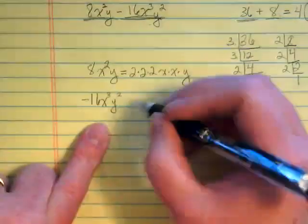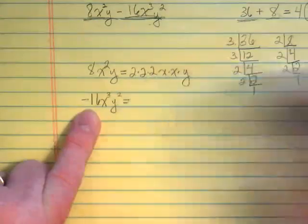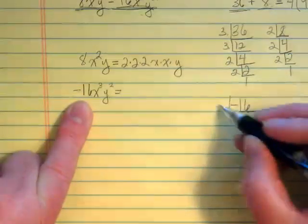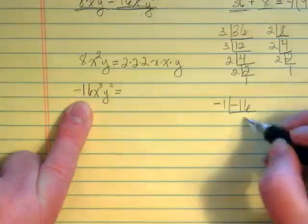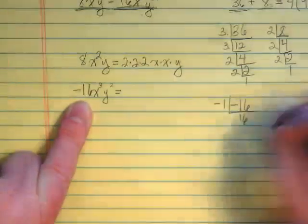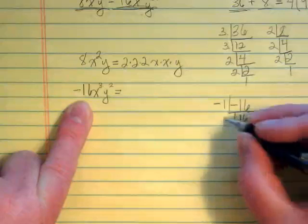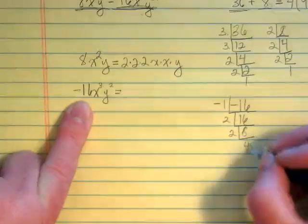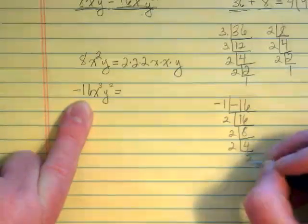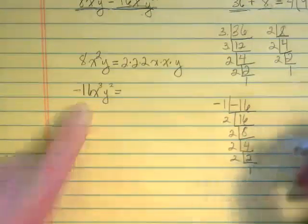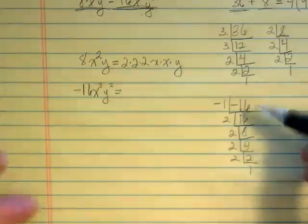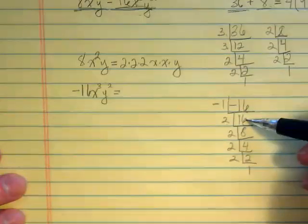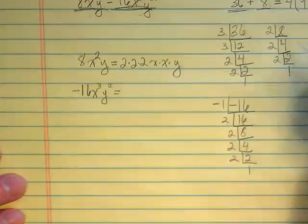For negative 16, let's take that over here and factor it out. Well, first thing I'm going to factor out is a negative 1, and then I'm dealing with a positive 16. Divide by 2 until I get down to a 1 at the bottom. What I have here is 4 2's, which makes sense because 16 is 1 more multiplied 2 from 8.